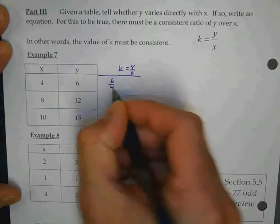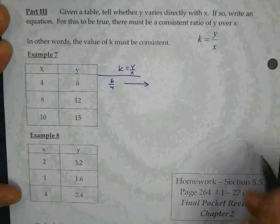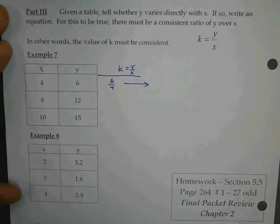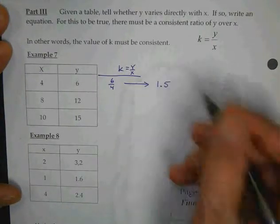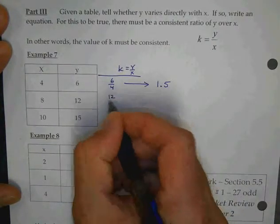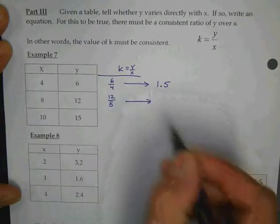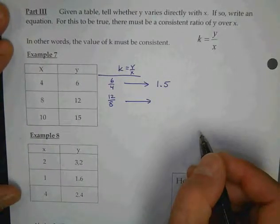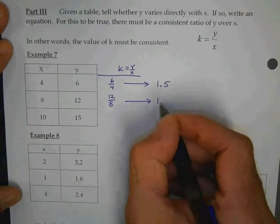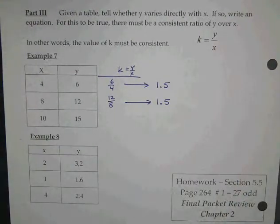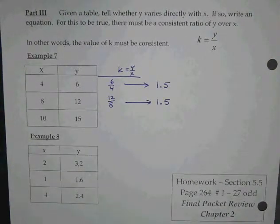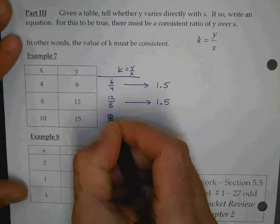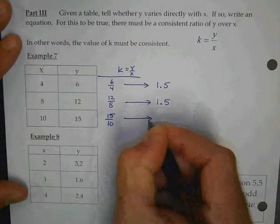What is 6 over 4 as a decimal? Divide it for me. What do you get? 1.5. Okay, so that's the first value of k. What's 12 over 8 as a decimal? Divide it again. 1.5 again. So far, is it consistent? Think of what the name is called. It's called the constant of variation. Is it constant so far? Yeah. But we better check all of them. What's 15 over 10? 1.5.